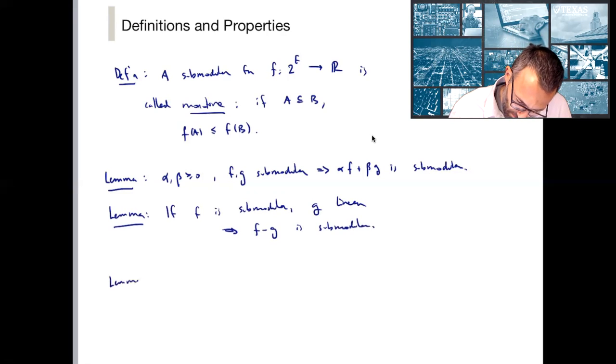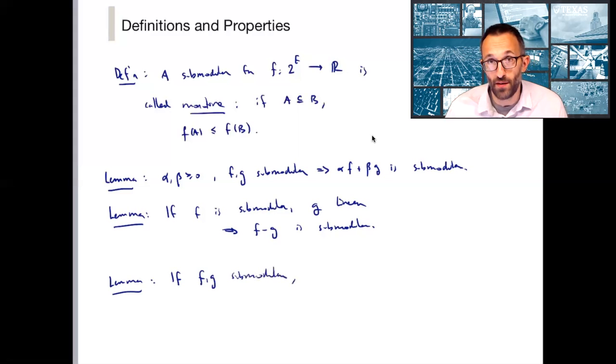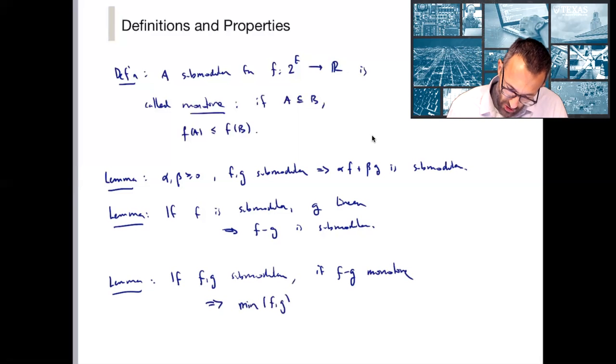And finally, the min of two submodular functions is again submodular as long as f minus g is monotone. So if f and g are submodular, and if f minus g is monotone, then it's possible to show that the minimum of f and g is again submodular.